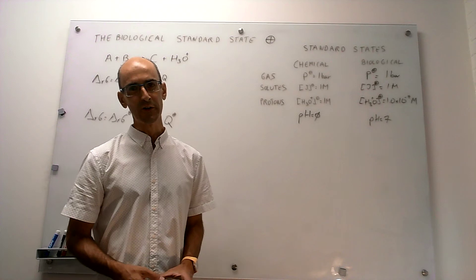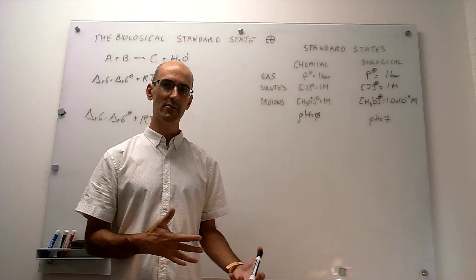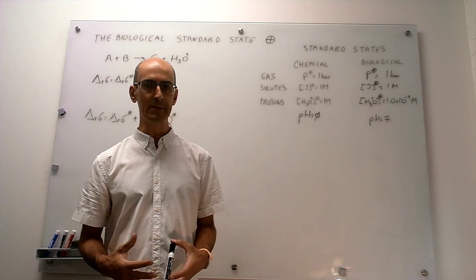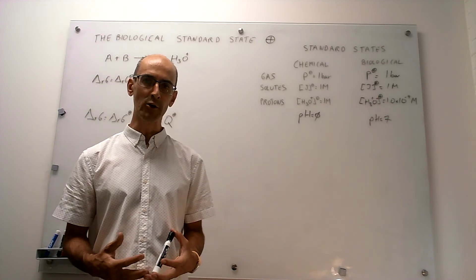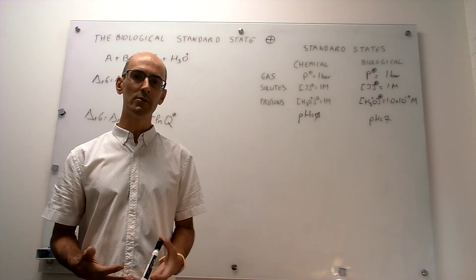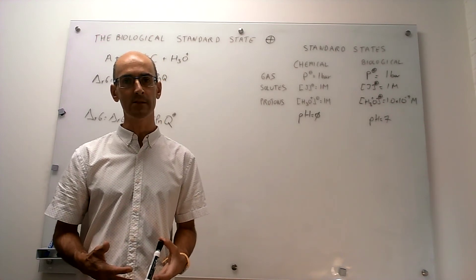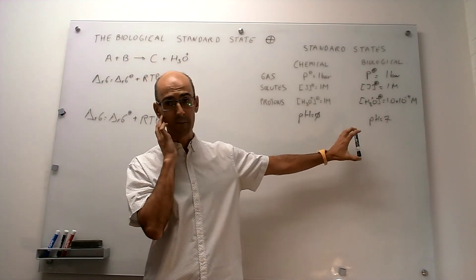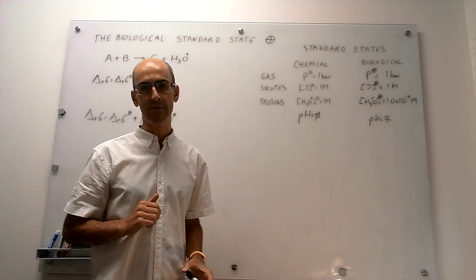In this video we're going to learn how to convert between the chemical standard state and the biological standard state, or vice versa. In the last video we introduced the concept of the biological standard state, which is simply a convenient way to set up a reference state when looking at chemical reactions in VEDA. This summarizes what we understand by the biological standard state with respect to the general or chemical standard state.